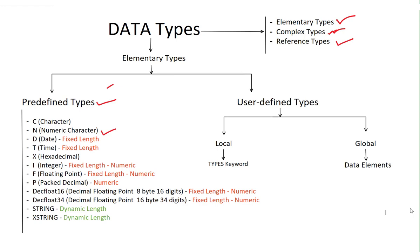Decfloat is a combination of TYPE F and TYPE P — it can process bigger numbers and store decimal values without statically specifying the decimal count, which is an advantage. Decfloat 16 is an 8-byte memory that can store up to 16 digits, and decfloat 34 is a 16-byte memory that can store up to 34 digits. String and xstring have dynamic length — string is for normal characters and xstring is for hexadecimal values. These are the available predefined types.